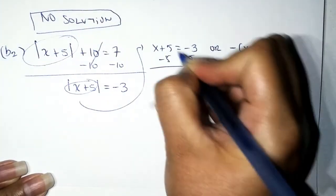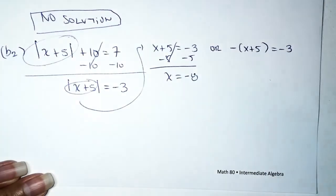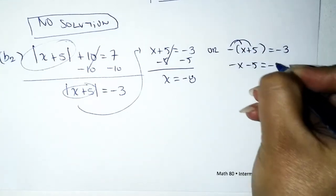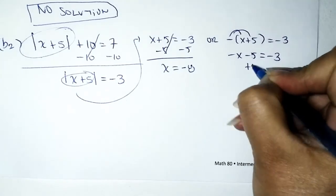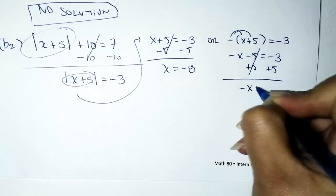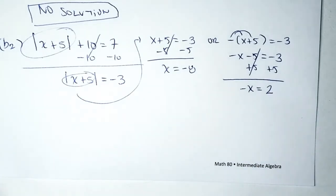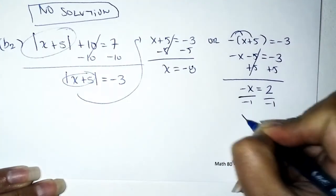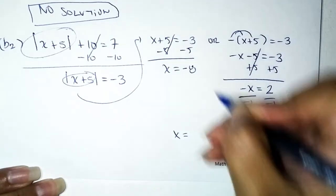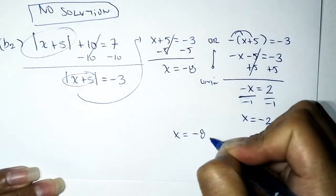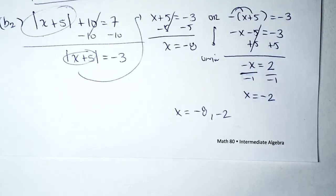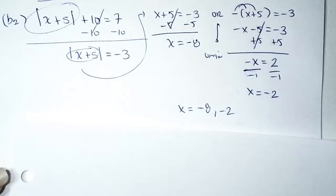First equation: subtract 5 from both sides, giving x equals negative 8. Second equation: distribute the negative to get negative x minus 5 equals negative 3. Add 5 to both sides: negative x equals 2. Divide both sides by negative 1: x equals negative 2. Combining our solutions using union: x equals negative 8 or negative 2. But let's check these answers.